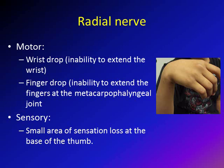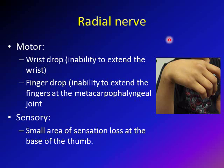Radial nerve palsy has motor and sensory manifestations. It's mainly a motor nerve, so the patient will have wrist drop — they will not be able to extend the wrist. This is a picture of a 14-year-old boy who had a traction injury of his radial nerve, resulting in radial nerve palsy. You can see he has wrist drop — he cannot pull his wrist up. He also has finger drop, meaning he cannot extend the fingers at the level of the metacarpophalangeal joint.